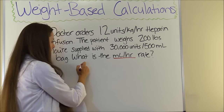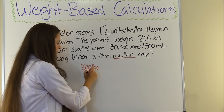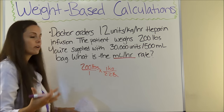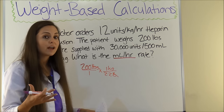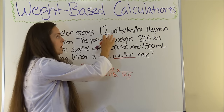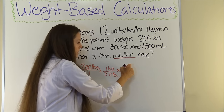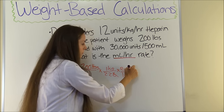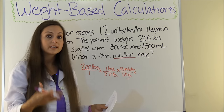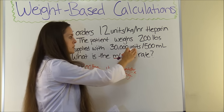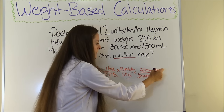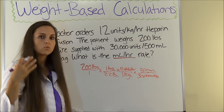Let's set our problem up. First, convert the weight: the patient weighs 200 pounds and there are 2.2 pounds in one kilogram — that cancels out pounds and we're in kilograms. Now we see how much heparin the patient needs based on their weight: 1 kilogram equals 12 units per hour. Kilograms cancels out. Now we figure out how much to give based on what we're supplied with: 30,000 units in a 500 milliliter bag. Units cancels out and we're left with milliliters per hour.